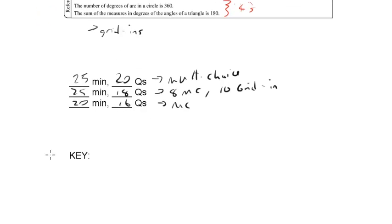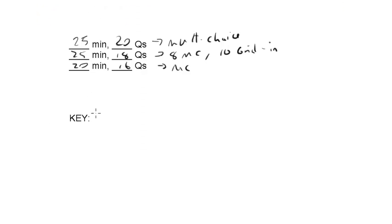The key thing I want to tell you about the math section here is what's called order of difficulty. That, in simple terms, means the questions get harder, or they are perceived to get harder as the numbers increase. So for instance, if we're talking about the 1 to 20 section,